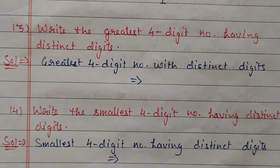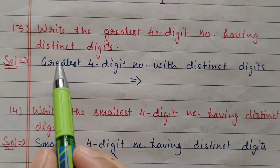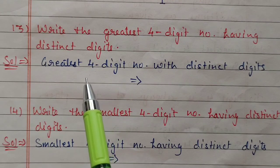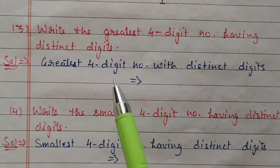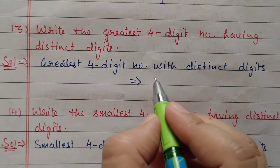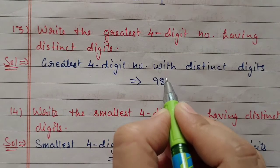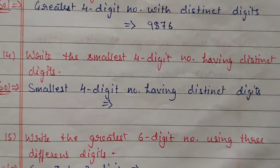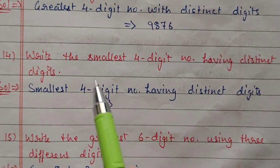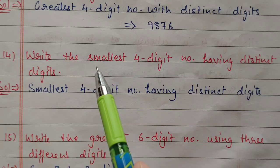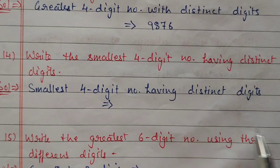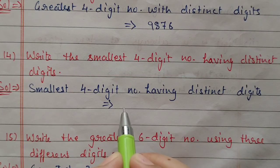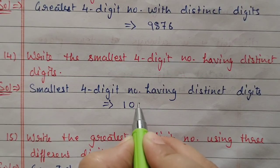Next question number 13: write the greatest 4-digit number having distinct digits. Distinct means different digits. Because we need the greatest 4-digit number, we take the greatest 4 digits: 9, 8, 7, and 6. So the answer is 9876. Next question number 14: write the smallest 4-digit number having distinct digits. We take the smallest digits: 0, 1, 2, 3. But 0 cannot be at thousands place, so we keep 1 there. The answer is 1023.